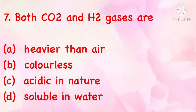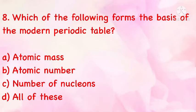Both CO₂ and H₂ gases are: (a) heavier than air, (b) colorless, (c) acidic in nature, (d) soluble in water. The correct answer is (b): colorless. Which of the following forms the basis of the modern periodic table? (a) atomic mass, (b) atomic number, (c) number of nucleons, (d) all of these. The correct answer is (b): atomic number.